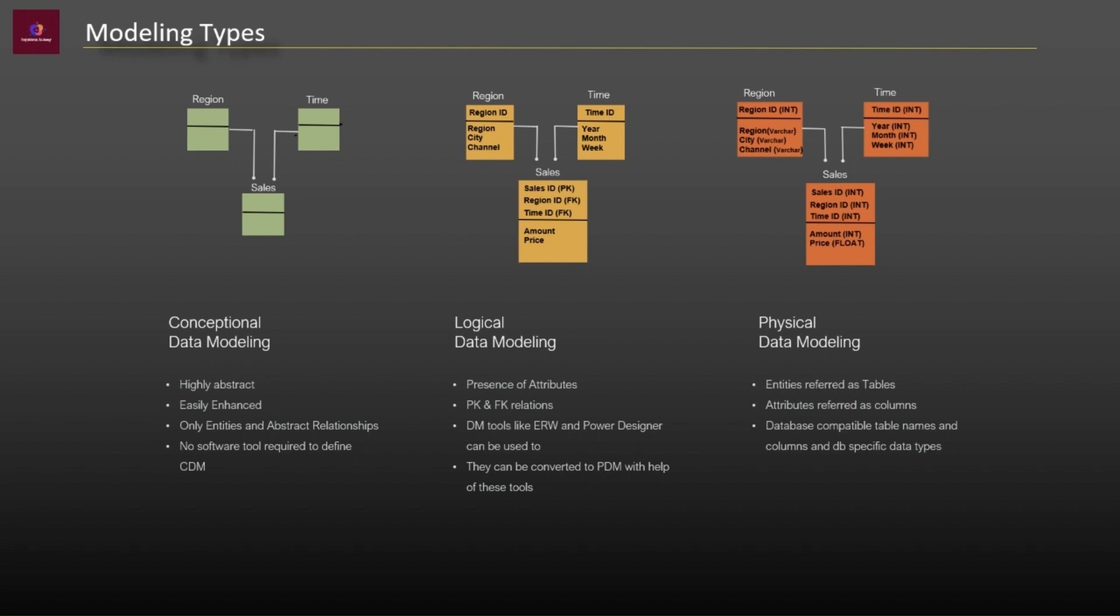The last one is physical data model which is least abstract of all. They offer to finalize design that can be implemented as database entities referred to as tables and attributes referred to as columns. So the columns should have exact data types, lengths assigned and default values, primary keys and foreign keys,